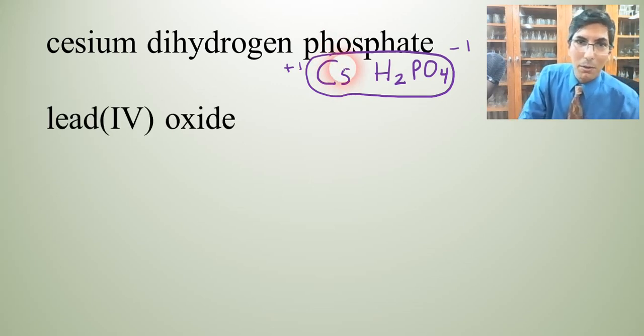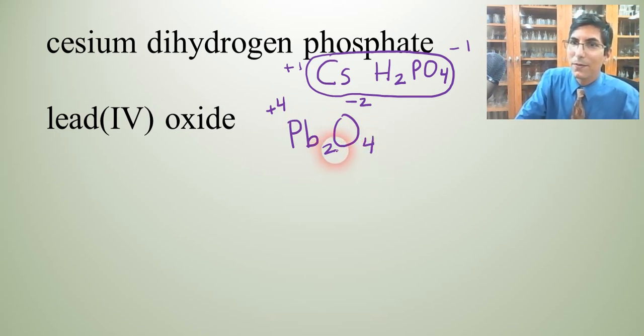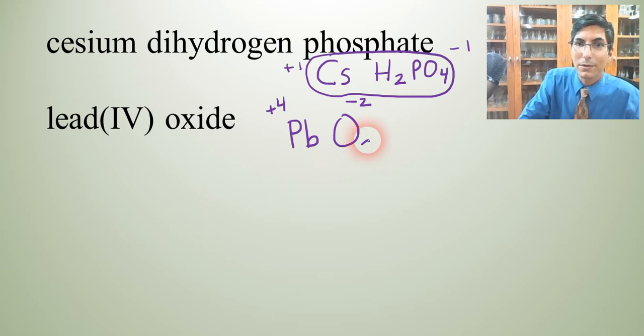Let's try lead(IV) oxide. Lead is Pb, and its charge is a positive 4. Oxide is O, oxygen, and its charge is negative 2. Those don't cancel out, so we're going to have to swap them. So you'd think we'll put a 2 down here and a 4 here. But do you see that we can simplify this down? This is like in algebra when you have a fraction or something else that you can simplify down. We can divide both of those by 2. So really, the answer is not going to be Pb2O4. It's actually going to be PbO2. That's the formula for lead(IV) oxide.